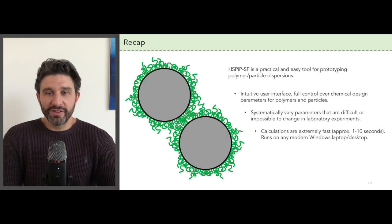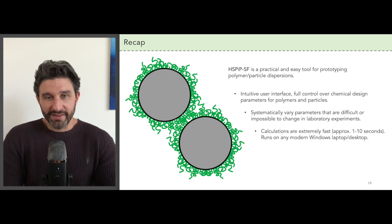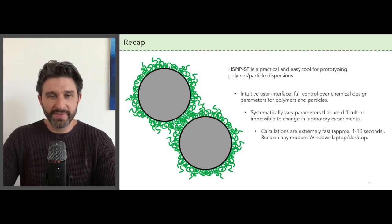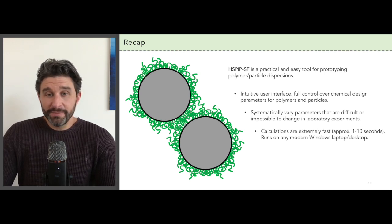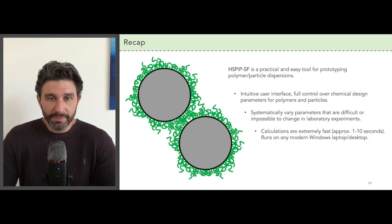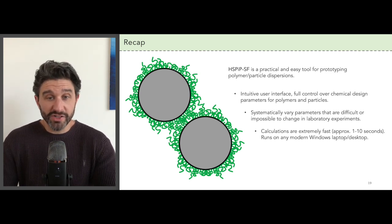All right, so that concludes this brief walkthrough of HSP-IP SF, a very easy and practical tool for prototyping polymer particle dispersions. It's an intuitive simple interface and you have full control over the chemical design parameters for the polymers and the particles as well as the interactions between those entities.